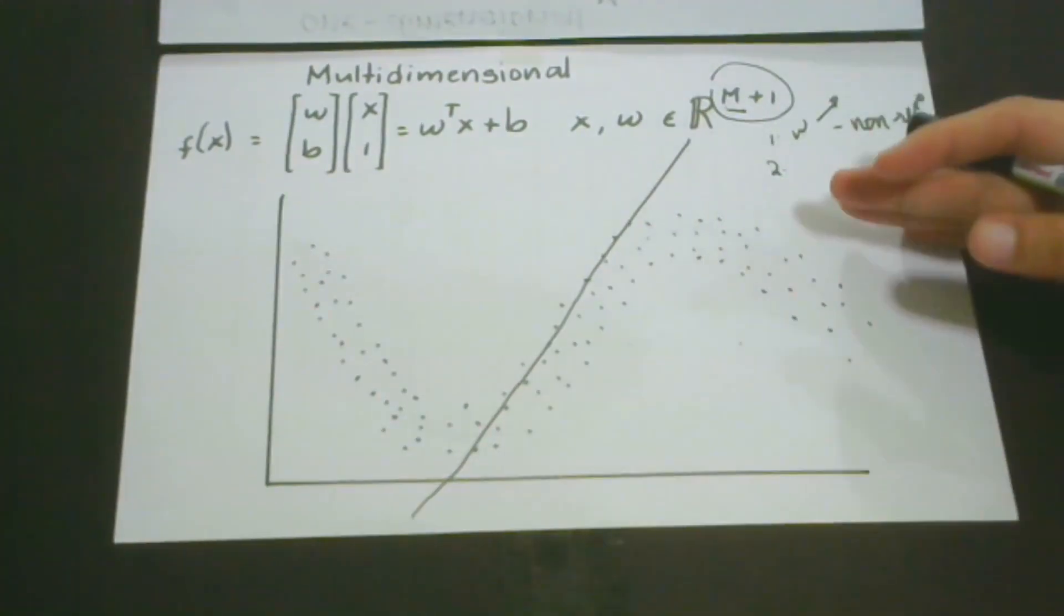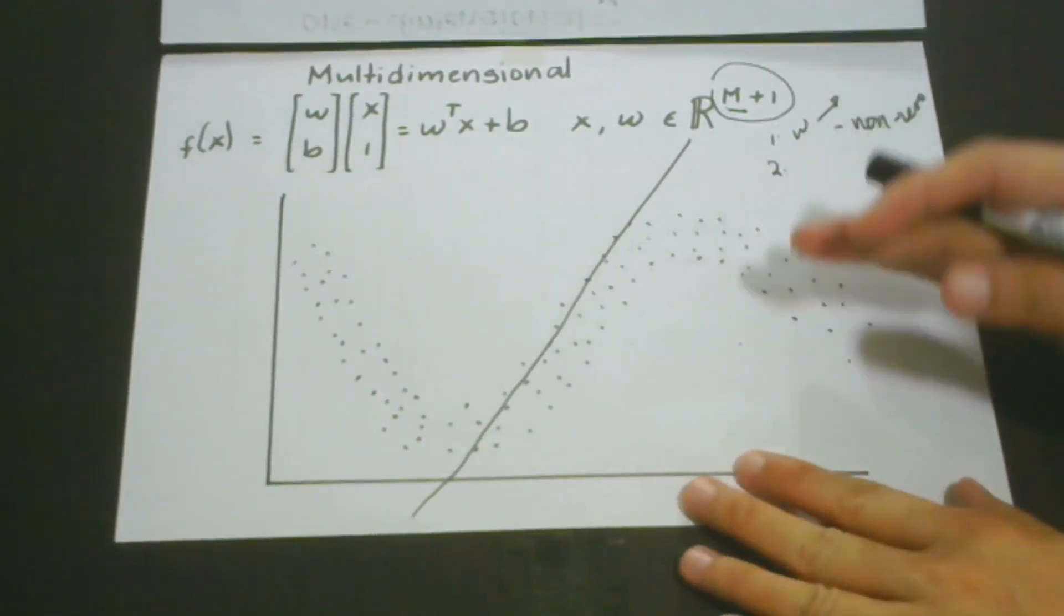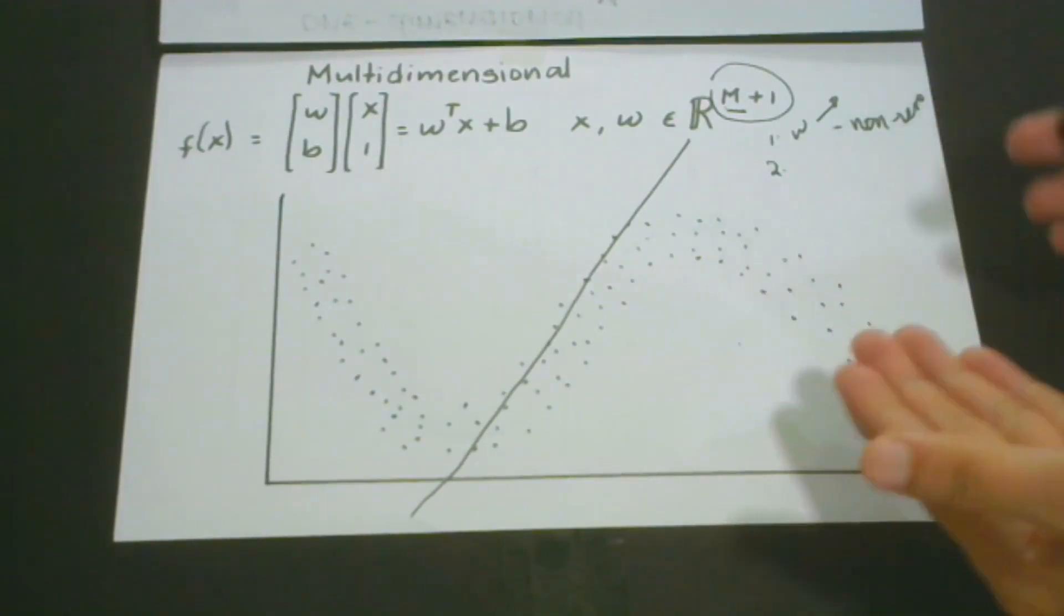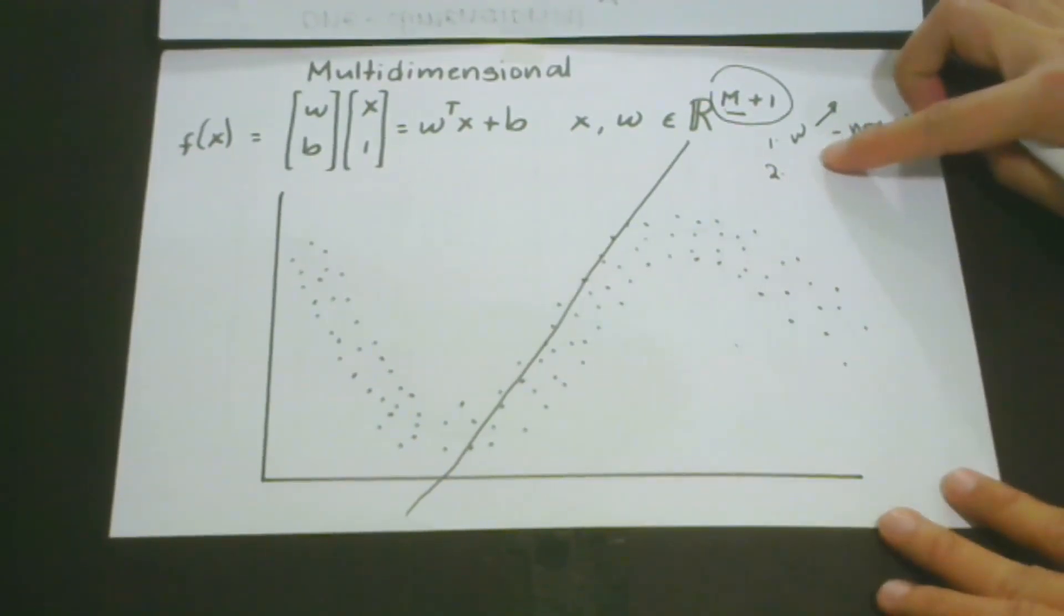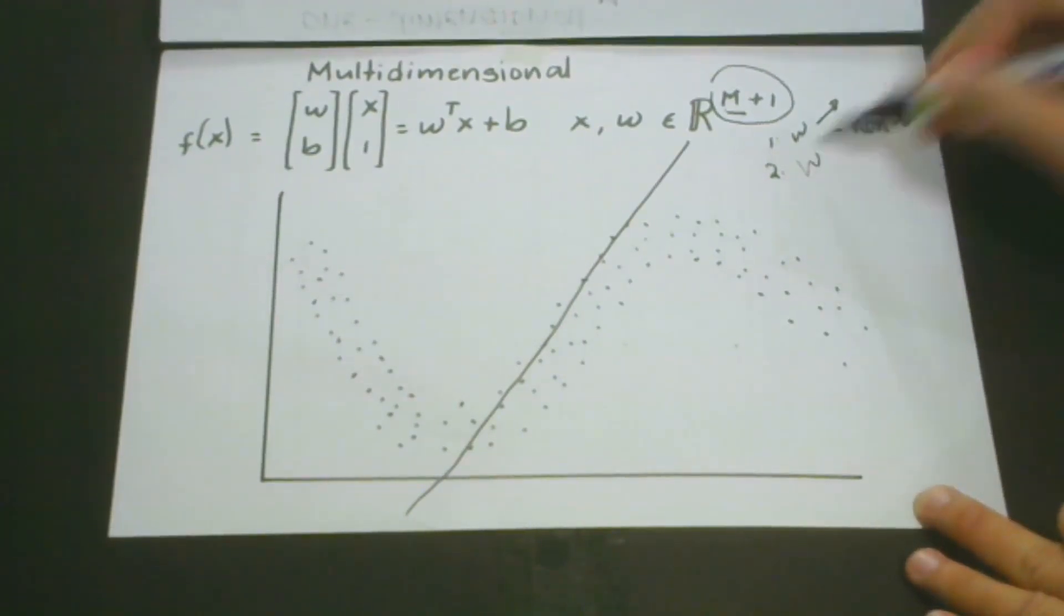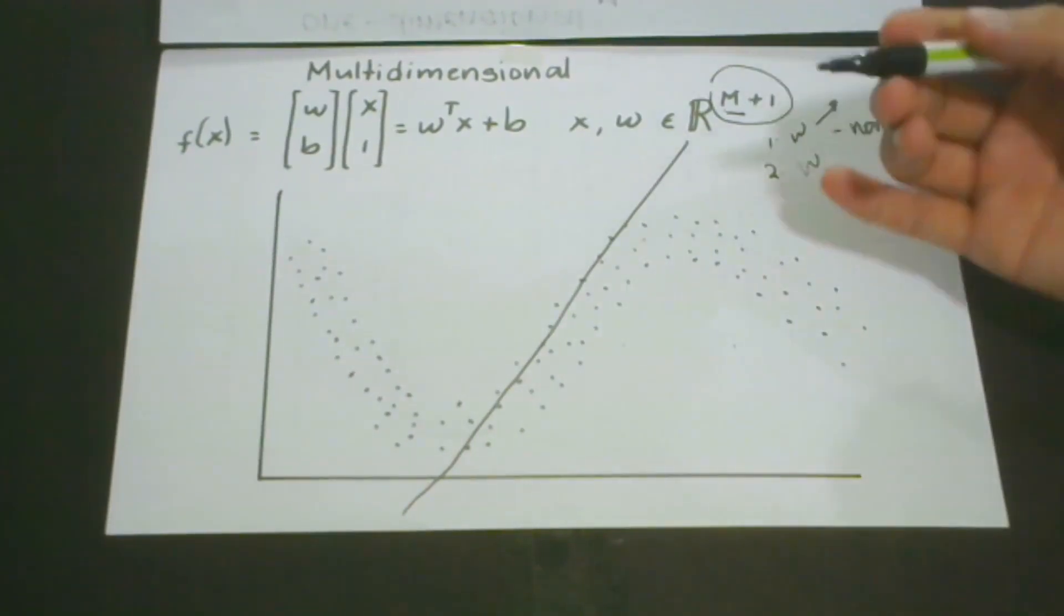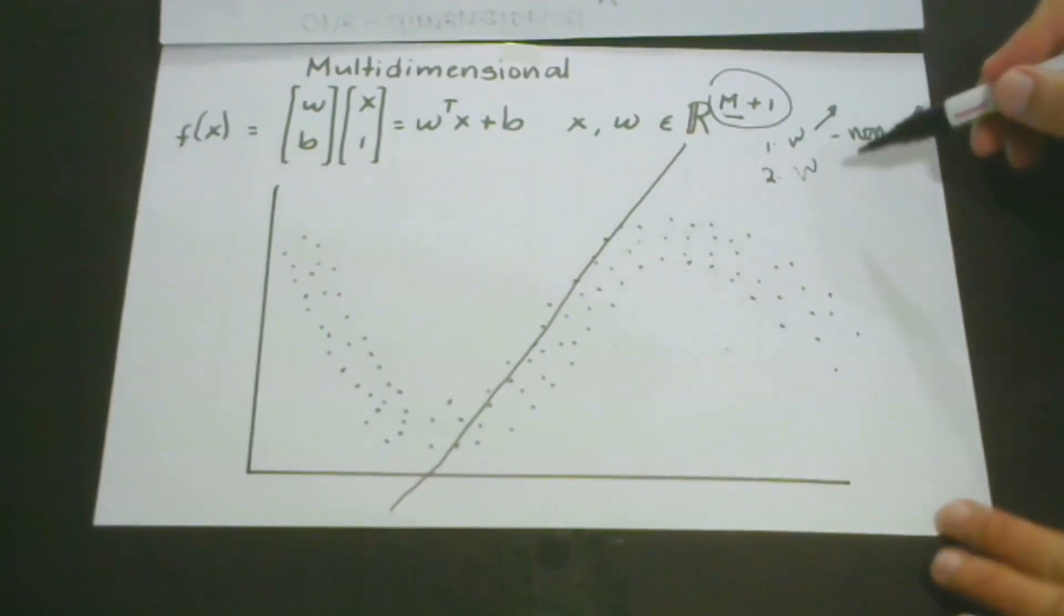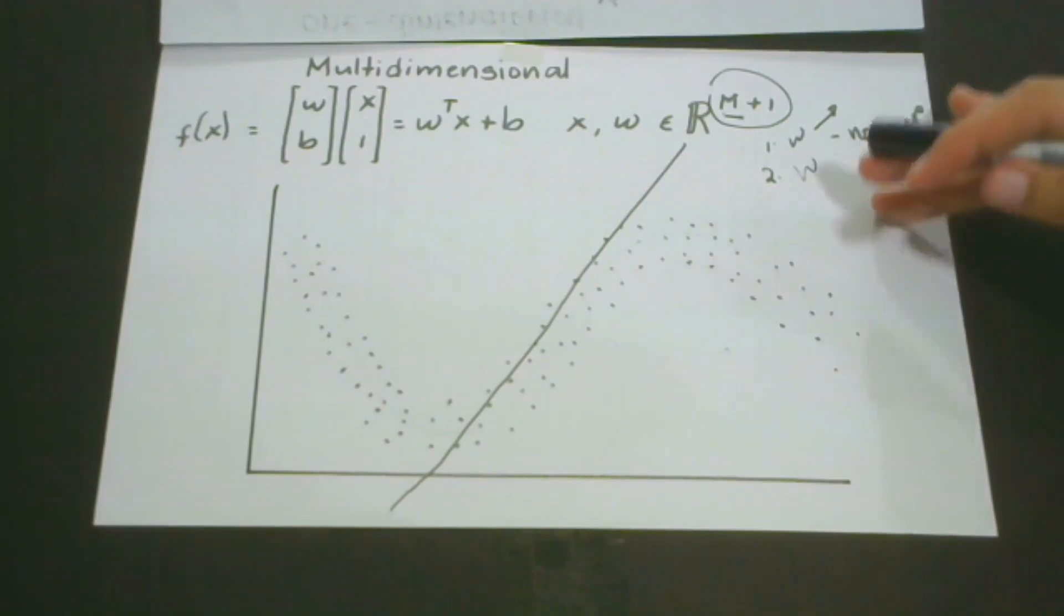What are we going to do? We're going to increase the number of our parameters, w in this case. Are we going to use only one? That means we'll have first-order polynomial. Do you think it would give us justice? I don't think it can, thinking that we have a lot of data points to consider.